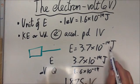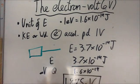So 3.7 times 10 to the minus 19 joules is equal to 1.875 electron volts.